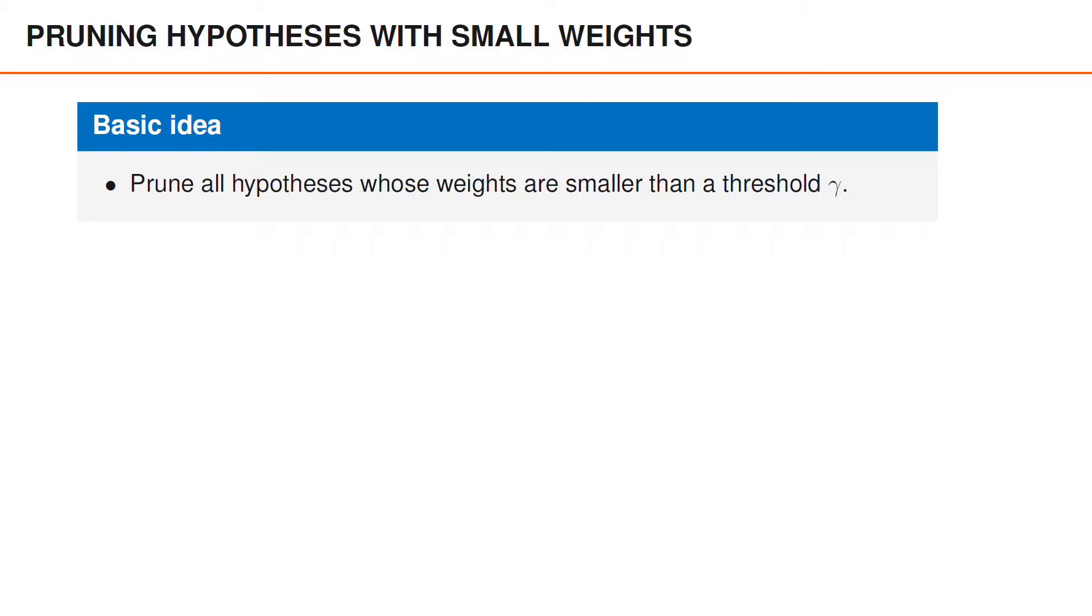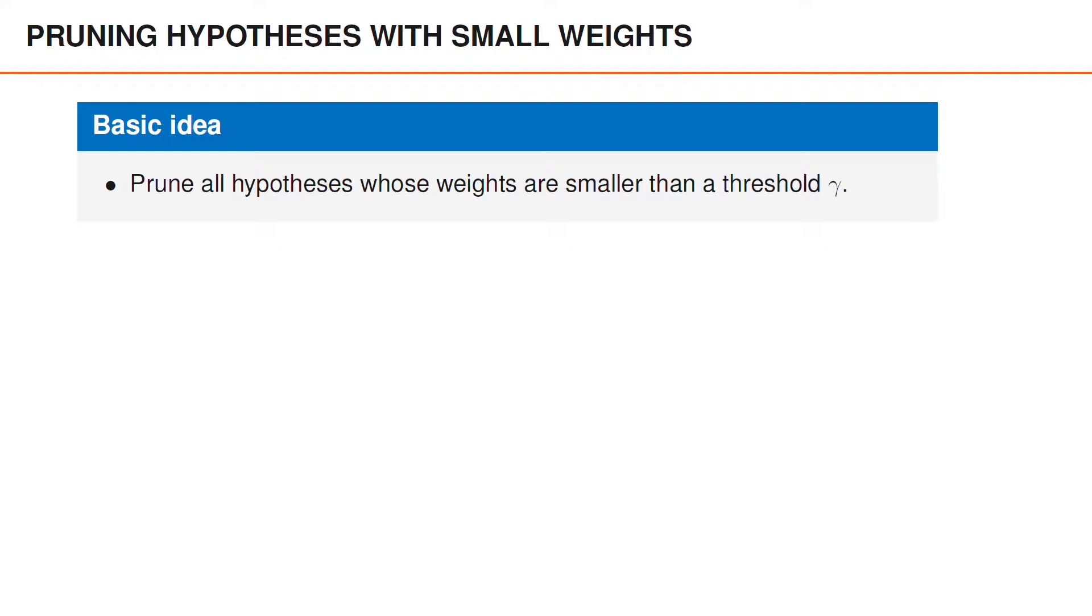The first strategy is to select the threshold gamma and remove all hypotheses whose weights are smaller than gamma. For instance, if gamma is 0.01 and we have a Gaussian mixture with three components where the second has a weight 0.005, we would conclude that the second hypothesis is insignificant and remove it from the mixture. After pruning, we then obtain a new density, here denoted as p with an acute accent above it, that only contains two components.